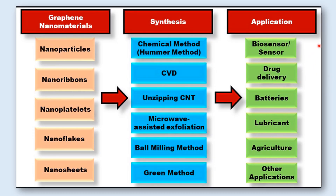This is the basic route map by which the graphene nanomaterial can be synthesized using various chemical methods, and it serves various applications like in biosensors, in sensors, in drug delivery systems, in batteries, in lubricants, in agriculture and other applications also.